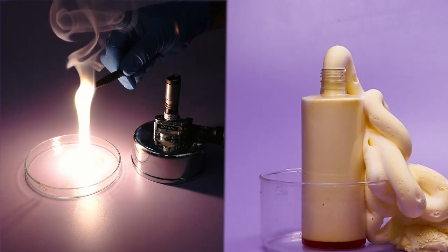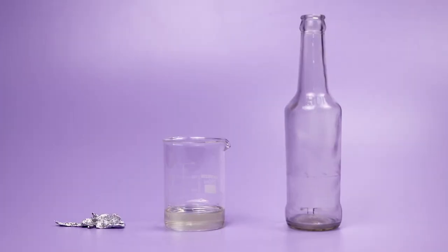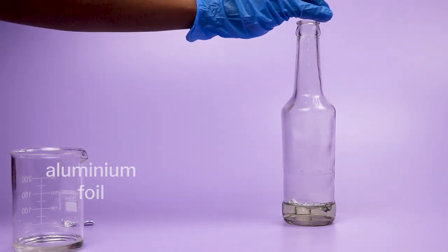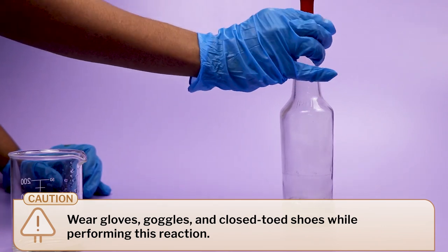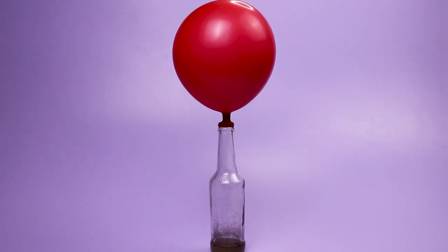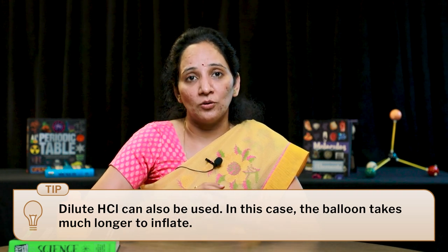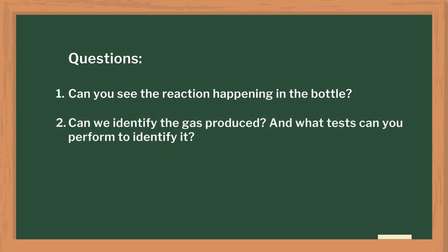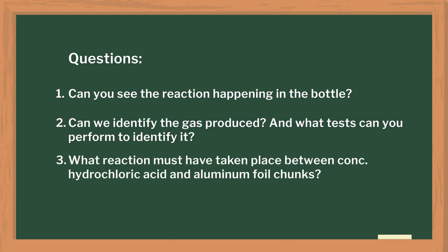After combination and decomposition reaction, I started explaining single displacement reaction of metals with acids. For this demonstration, you can take some concentrated hydrochloric acid in a glass bottle and add chunks of aluminium foil to it. Attach a balloon on top to observe the collection of gas. Ask students to observe the reaction. As this activity requires concentrated hydrochloric acid, the teacher should give a demo in front of the class. Questions to ask: Can you see the smoke-like gas coming out of the bottle? Can you identify the gas collected in the balloon? What test should be performed to identify the gas? What reaction took place between concentrated hydrochloric acid and aluminium foil?